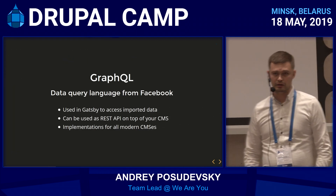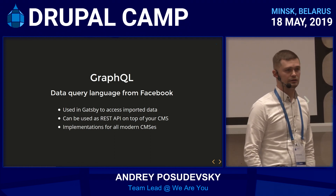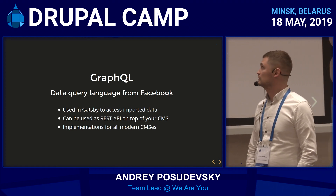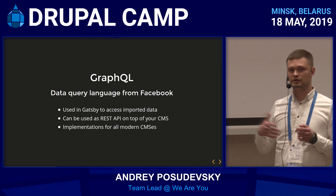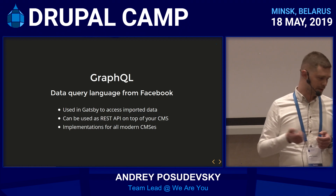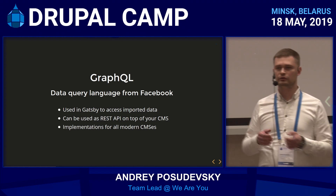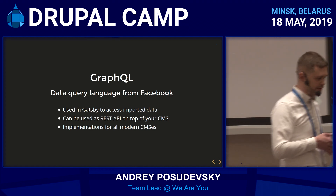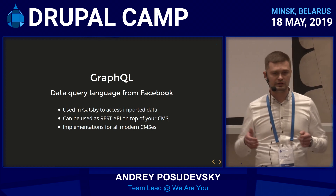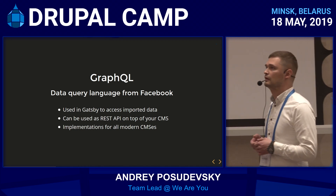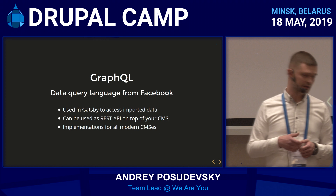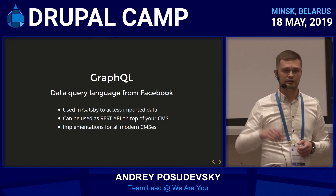Gatsby is using GraphQL, the data query language from Facebook. It's used to access data imported from Drupal. It can also be used as a REST API sitting on top of your CMS. You compose a GraphQL query, and it works similarly to a SQL query. You can request any data you want directly through the REST API using GraphQL. It also has implementations for different CMSs, so if you decide to replace Drupal with something else — Umbraco or whatever — you can still keep your frontend running with the changed CMS.